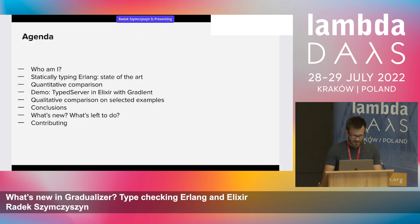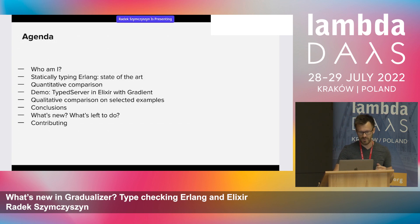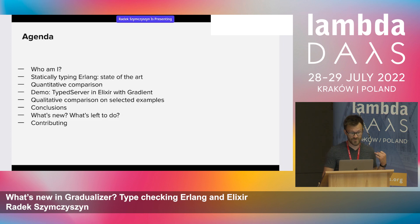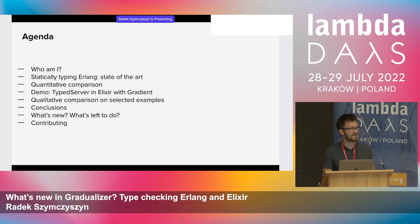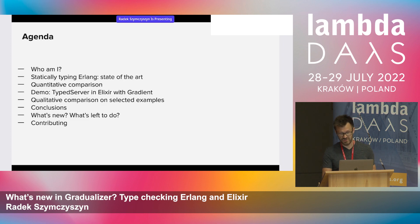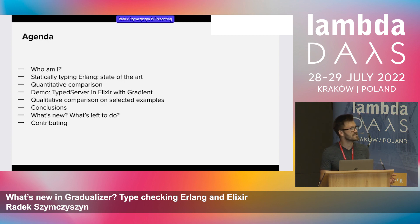What I would like to cover today: a short introduction, then the state of the art in the Erlang ecosystem, some numbers comparing different type checkers, a demo of Gradient which is an Elixir frontend to Gradualizer, a qualitative comparison on selected source code examples, some conclusions, and finally what's newly developed and what's still on the to-do list.